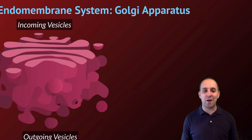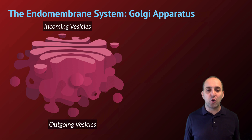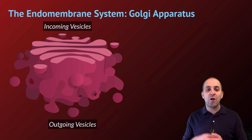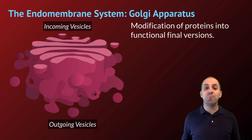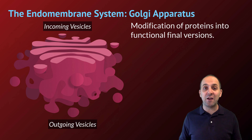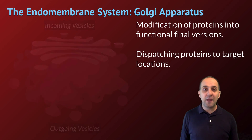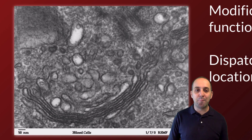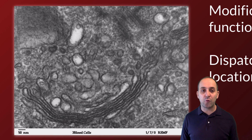The Golgi apparatus diagram shows incoming vesicles at the top that fuse with the flattened membrane compartments of the Golgi. Material moves from one compartment to the next by traveling through vesicles until finally leaving by outgoing vesicles. The Golgi apparatus serves as a place to modify proteins into their functional final versions — adding other substances or chemically modifying them before dispatching them to wherever they need to go inside the cell. In this electron micrograph you can see the Golgi apparatus as that series of flattened membranous compartments, surrounded by vesicles in the process of arriving or departing.